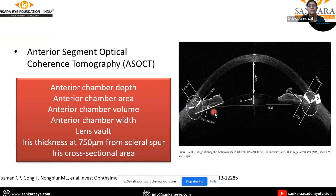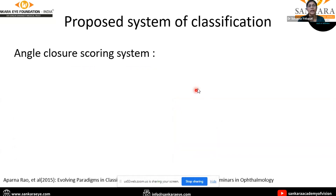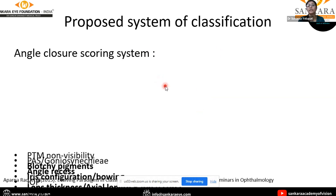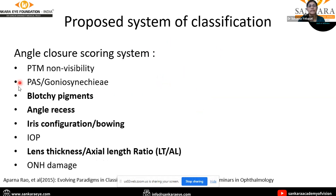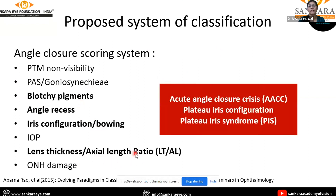Even though these imaging technologies have emerged, gonioscopy remains the gold standard. The proposed classification system by Aparna Rao et al. is an angle closure scoring system. Along with the above parameters, they also considered blotchy pigments and angle recess, iris configuration and bowing, and lens thickness to axial length ratio. By considering all these parameters, this system accommodates every possible stage.